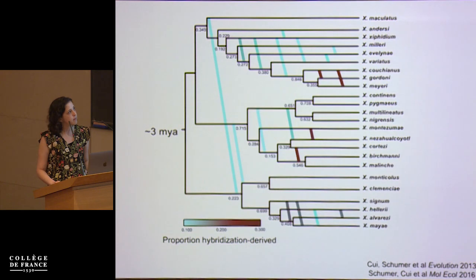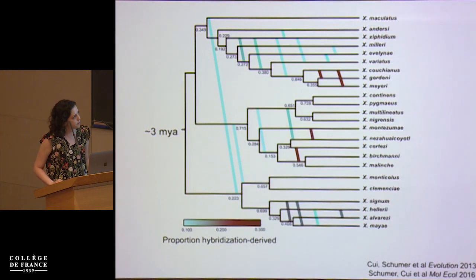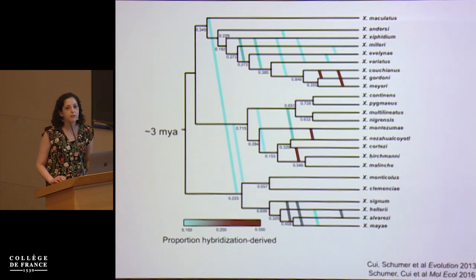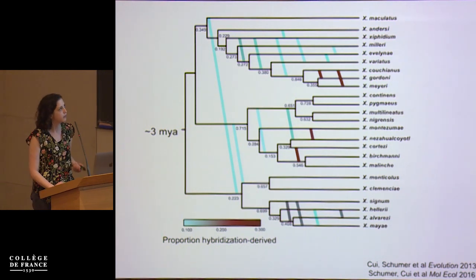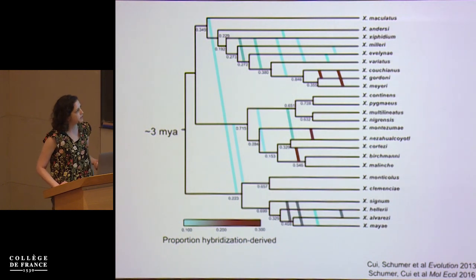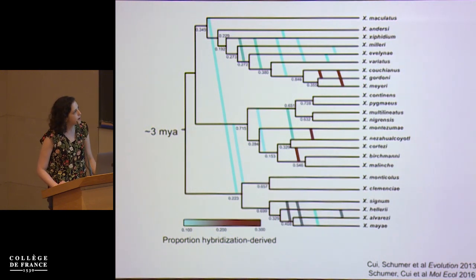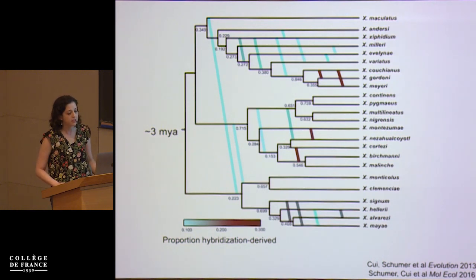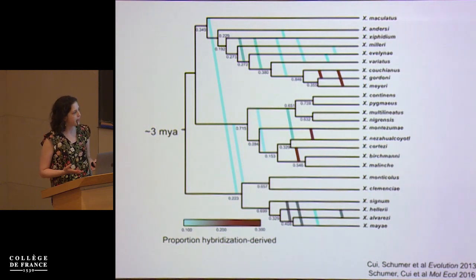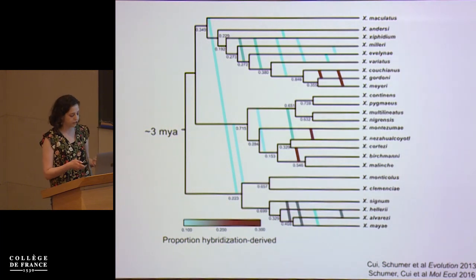One of my first PhD projects really shaped the way that I've been thinking about this problem. We were trying to infer relationships between species using a large number of gene trees, and in doing so we saw really strong evidence for discordance that we ultimately concluded was due to gene flow. This gene flow was operating on both historical and contemporary time scales, such that in some of the modern species we were studying, upwards of 10% of the genome had been initially derived from hybridization.